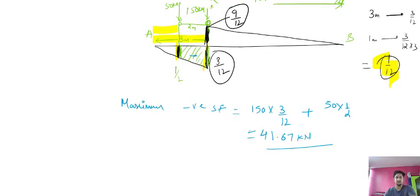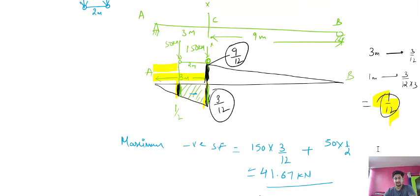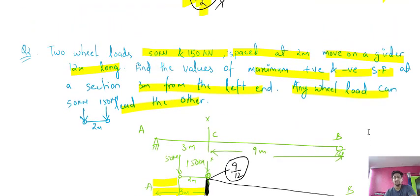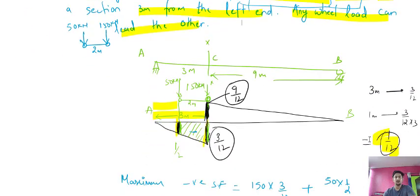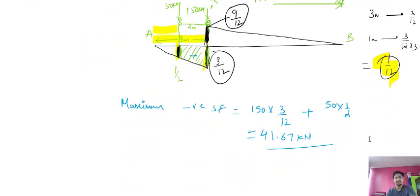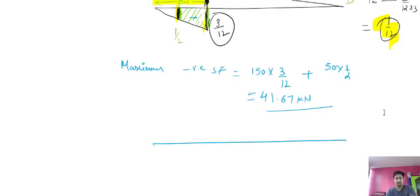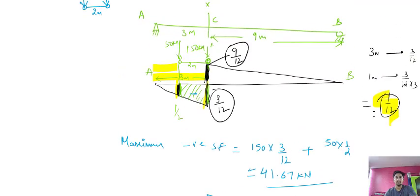For the second case, the 50 kN load is ahead. Maximum shear force occurs when the maximum load (150 kN) acts at the section point. Now drawing the shear force ILD: the ordinate at the section is 3/12 on one side and 9/12 on the other side.